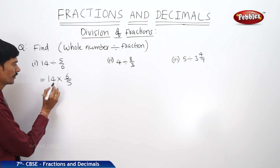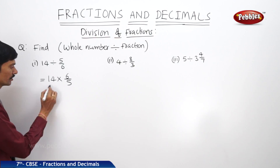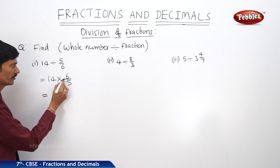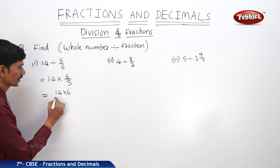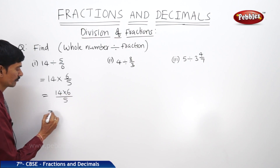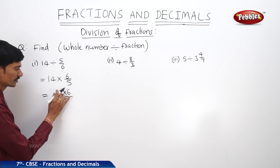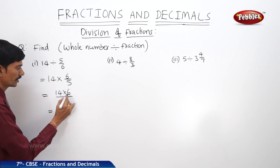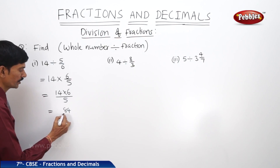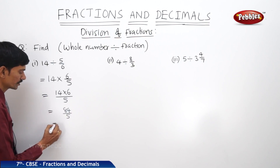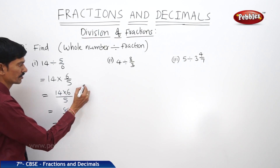To multiply a fraction with a whole number, we just multiply the whole number with the numerator of the fraction. So we get 14 × 6/5, which equals 84/5. This is an improper fraction, so we can convert it into a mixed fraction.